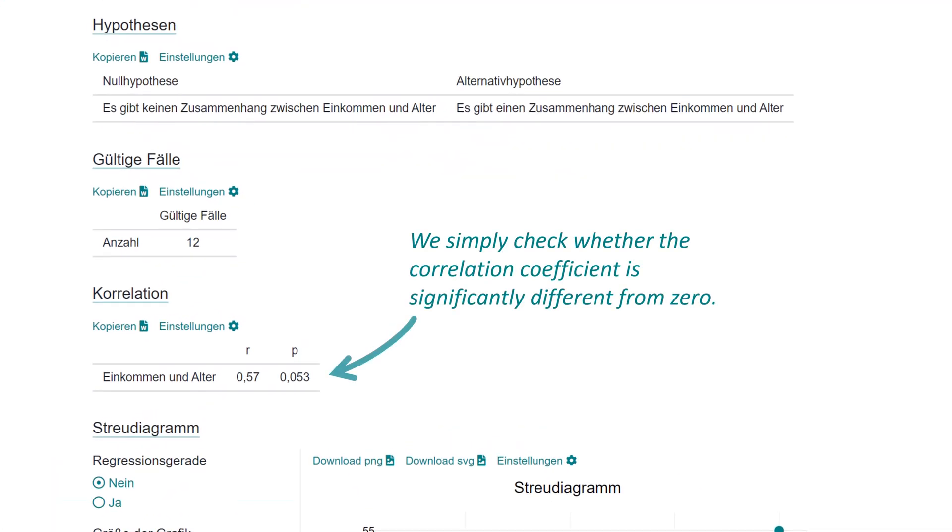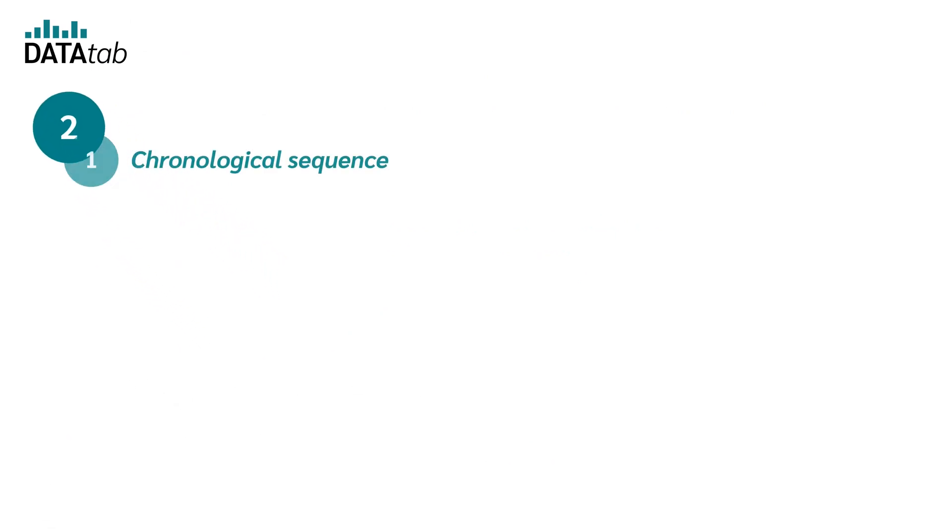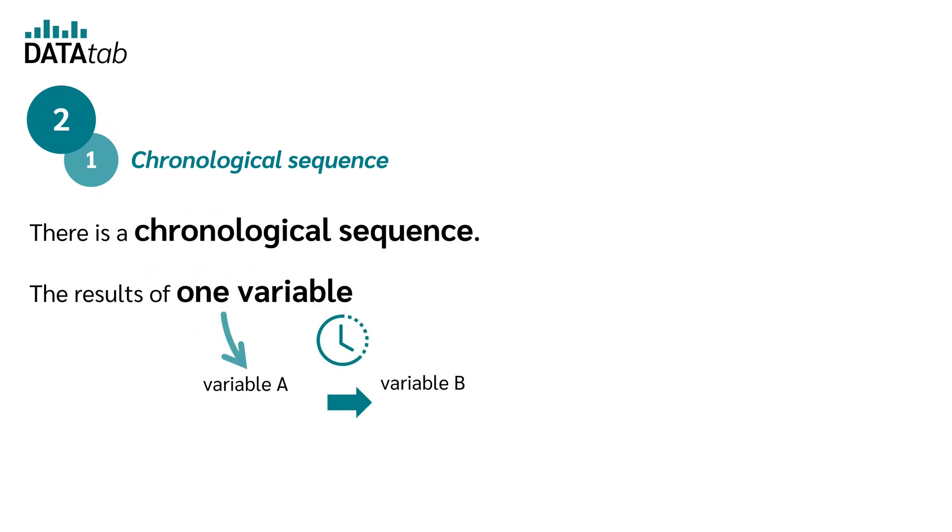We simply check whether the correlation coefficient is significantly different from zero. Number two, the second condition can be met in three ways. First, chronological sequence. There is a chronological sequence and the results of one variable occurred before the results of the other variable.